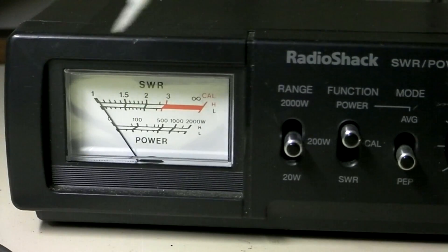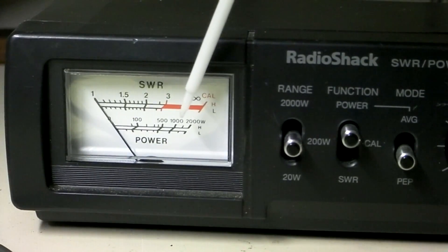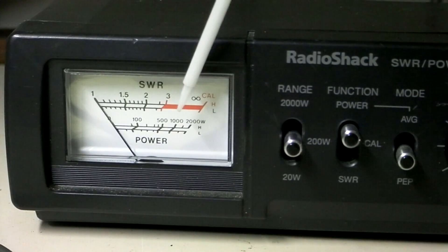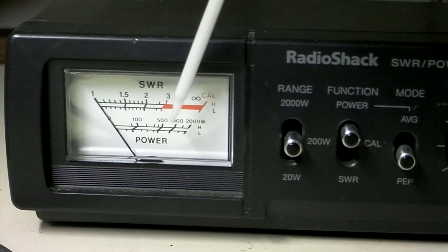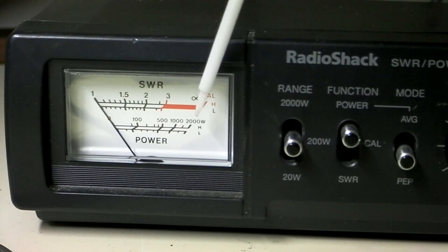And you'll see. It doesn't have a peak hold on it, but you'll see the peak output is showing right about in between. It goes 100, where that 1,000 shows there on the 200 watt scale. That's 100 watts, and then 2,000 is 200 watts.